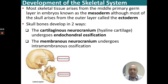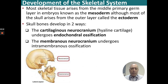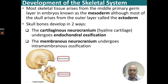Now that we've finished the appendicular skeleton, a little about skeletal development. Most skeletal tissue arises from the middle germ layer of the embryo, the mesoderm. However, the skull mainly arises from the ectoderm. The skull bones develop in two ways, divided into the neurocranium and the viscerocranium. The viscerocranium contains the nose bones, the maxilla, and the mandible, while the neurocranium contains the plates. The cartilaginous neurocranium (hyaline cartilage) undergoes endochondral ossification through the cartilage model, and the membranous neurocranium undergoes intramembranous ossification.